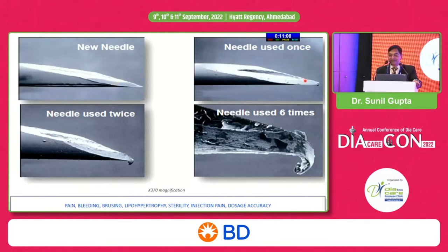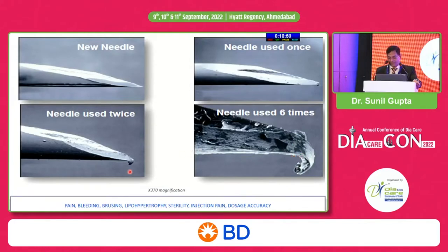This is the needle after first use — you can see a little curve. After the second use, you can see blunting. When you use it for the sixth time, the electron microscope image at 370x magnification shows the needle becomes severely deformed. You can imagine how painful this needle would be after five or six uses.